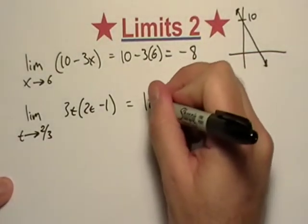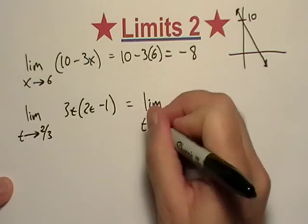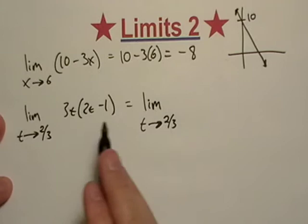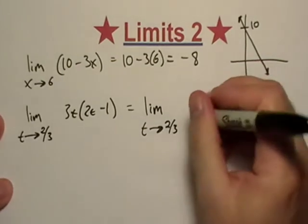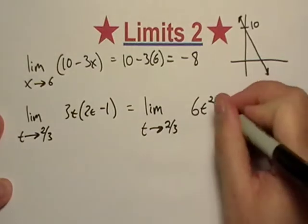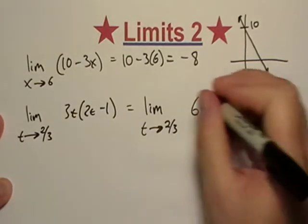So I'm going to rewrite this limit. Because technically we haven't evaluated the limit yet, so we need to keep that nearby. So what we'll do, we'll get 6t squared minus 3t.